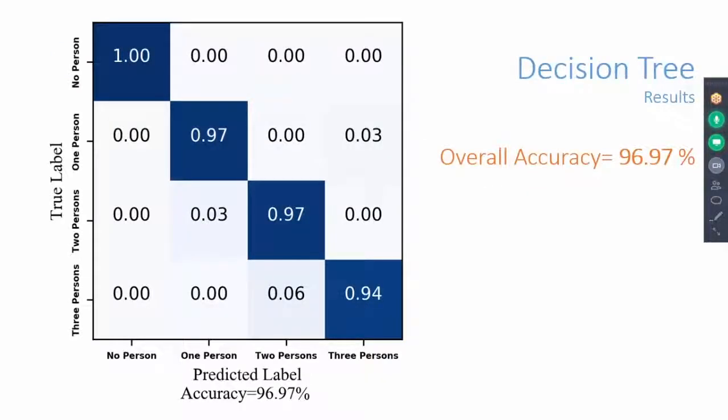This is the output confusion matrix for the decision tree algorithm. Our system achieves overall average accuracy of 96.97%.